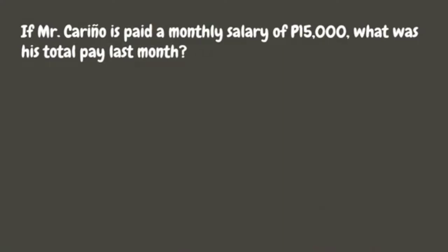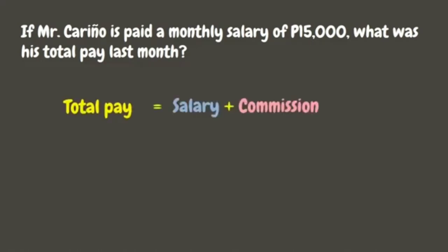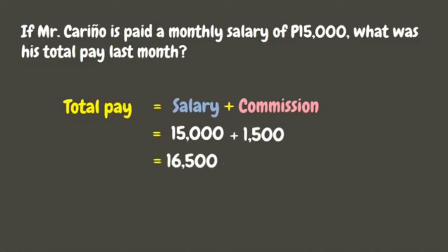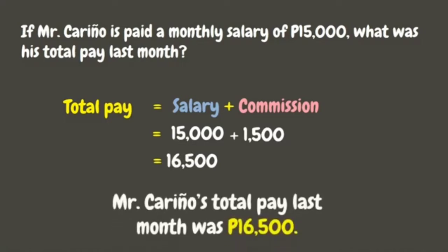Now, let's say Mr. Carino is paid a monthly salary of fifteen thousand pesos. What was his total pay last month? To solve for the total pay, we simply need to add the salary plus the commission. The monthly salary of Mr. Carino is fifteen thousand pesos, while his commission last month was one thousand five hundred. So, let's add: sixteen thousand five hundred. Mr. Carino's total pay last month was sixteen thousand five hundred pesos.